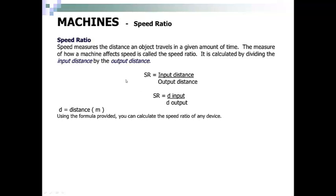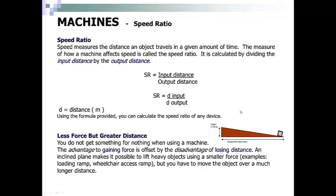D is distance in meters. Using the formula provided, you can calculate the speed ratio of any device, including this incline plane, which uses less force but greater distance.